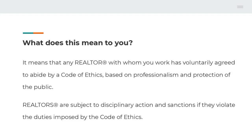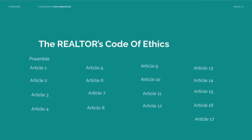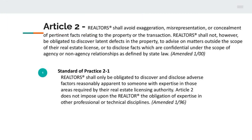Today we're going to talk about Article 2 of the Code of Ethics. Last week we had the preamble and Article 1. Today we're going to discuss Article 2, which clearly states that Realtors shall avoid exaggeration, misrepresentation, or concealment of pertinent facts relating to the property or the transaction.